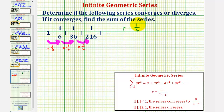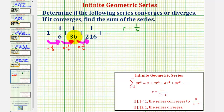Another way to test if this is geometric is to take any term a_n and divide by the previous term a_{n-1} and see if we get the common ratio R. Notice how 1/6 divided by 1 is 1/6, and 1/36 divided by 1/6 is also 1/6, and so on.